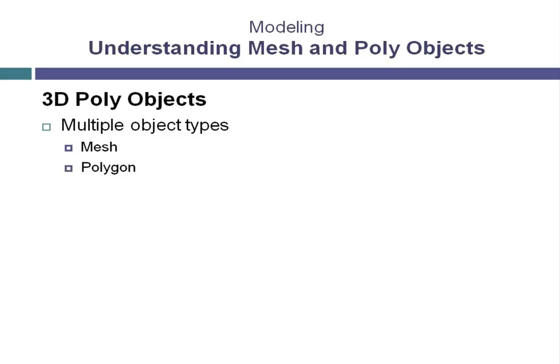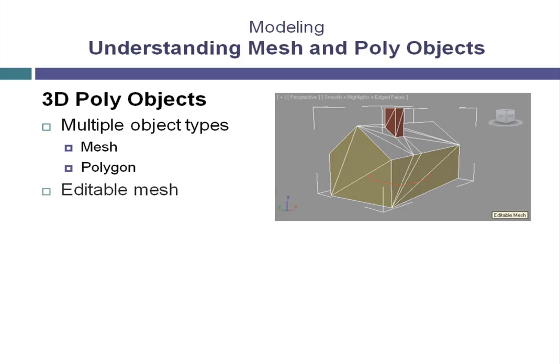There are other types of 3D objects, however these are the two primary types of geometry within 3ds Max and will be the geometry you are working with in most situations. Editable mesh objects are composed of connected triangular faces. There is a good set of sub-object editing tools available, allowing quite a bit of flexibility in the 3D editing process.